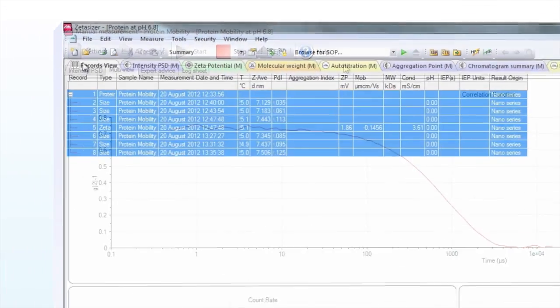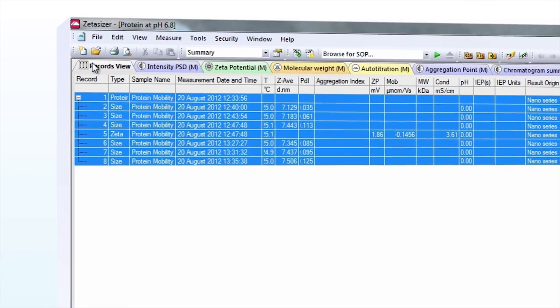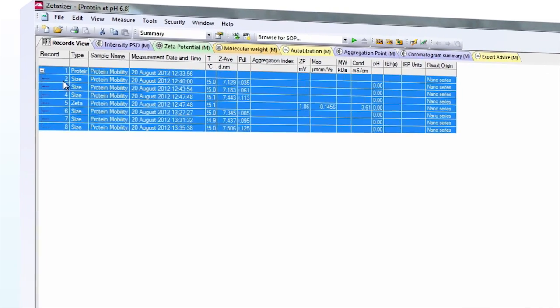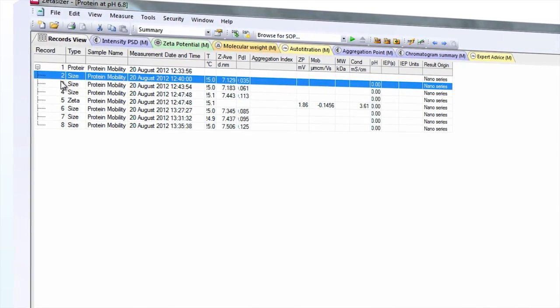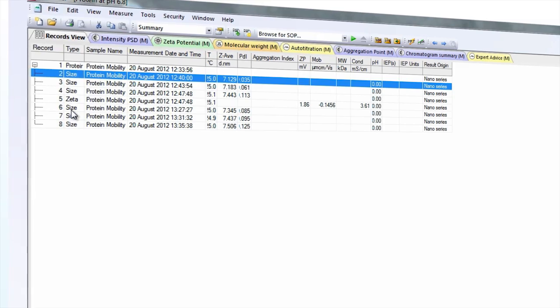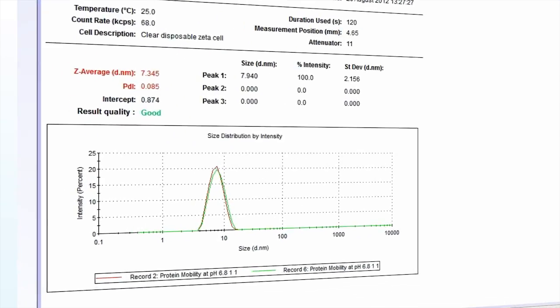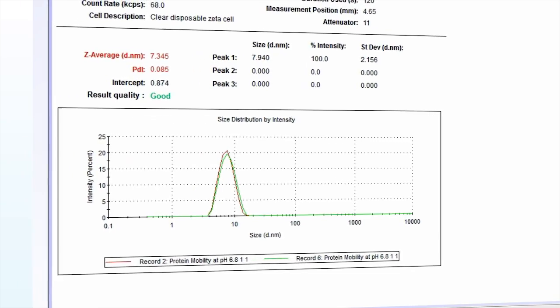At the end of the measurement, the results are displayed in the records view of the Zetacizer software. The size measurements before and after the Mobility measurement should indicate that the sample hasn't changed during the measurement. Here the size distributions overlay well, indicating the sample has not aggregated.